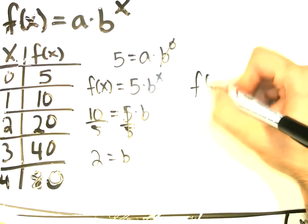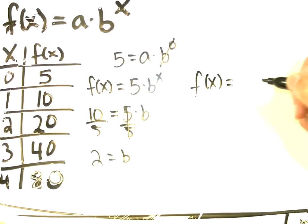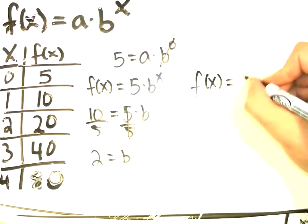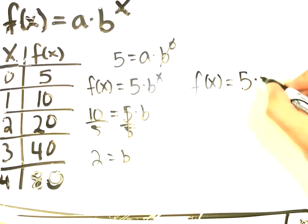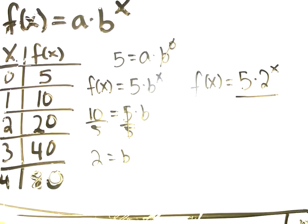So to sum it up, I'm going to have my equation written like this. F of X equals 5 times 2 to the X. And I look for that answer choice. And then I'm done.